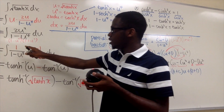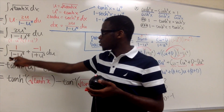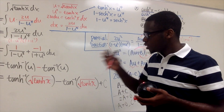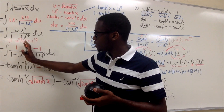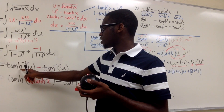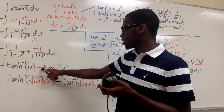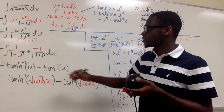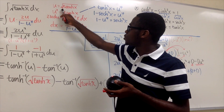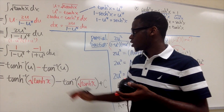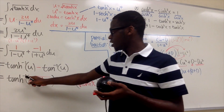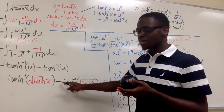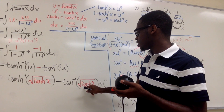Substituting back, we now have the integral of [1/(1 − u²) − 1/(1 + u²)] du. These are two separate integrals: the first gives the inverse hyperbolic tangent of u, and the second gives the inverse tangent of u. Since the problem was in x, we substitute u = √(tanh(x)) back in. The final answer is tanh⁻¹(√(tanh(x))) − tan⁻¹(√(tanh(x))) + C.